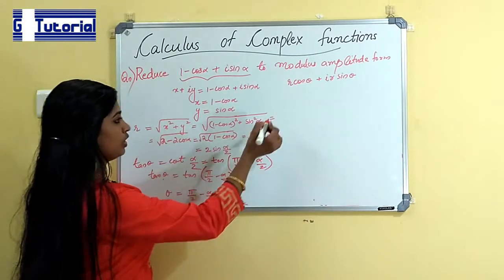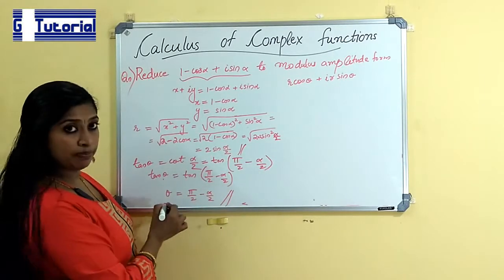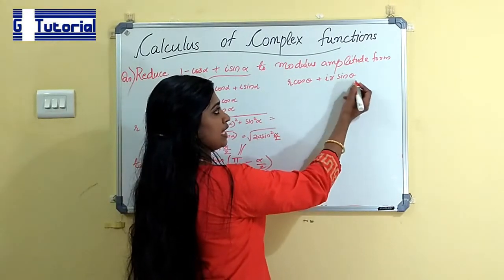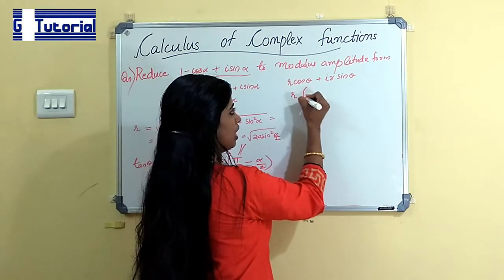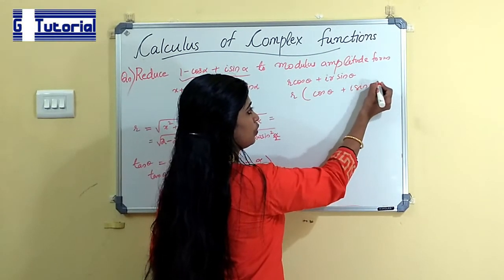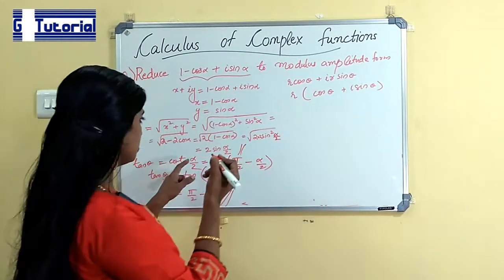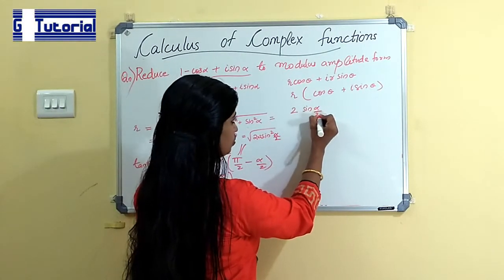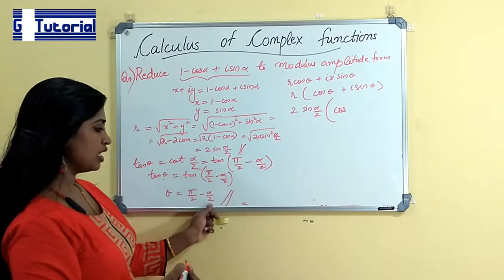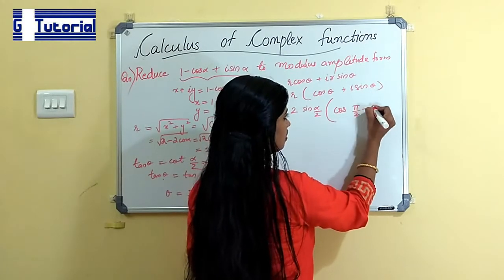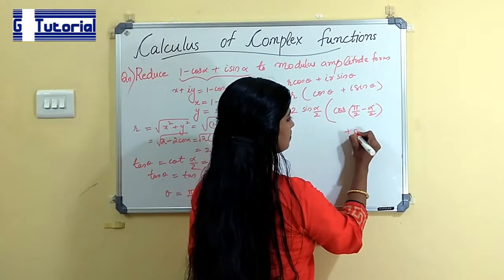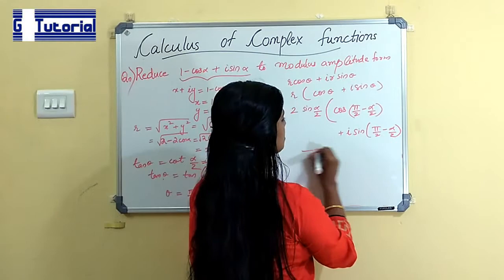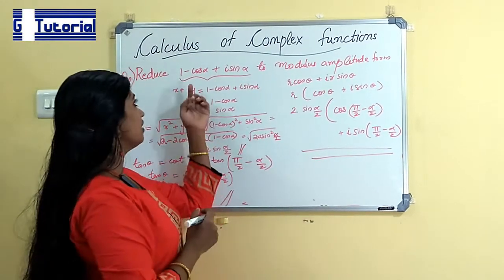Now we have obtained both the modulus and the amplitude θ. So we can express this complex number in modulus-amplitude form: R(cos θ plus i sin θ). Substituting, R equals 2 sin(α/2) and θ equals π/2 minus α/2. The final answer is 2 sin(α/2) times [cos(π/2 minus α/2) plus i sin(π/2 minus α/2)]. This is the required modulus-amplitude representation of the given complex number.